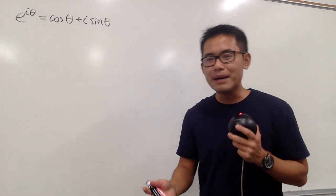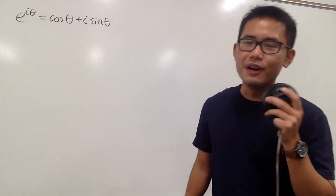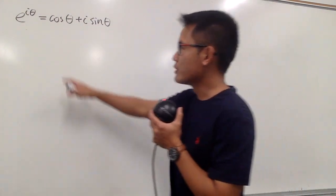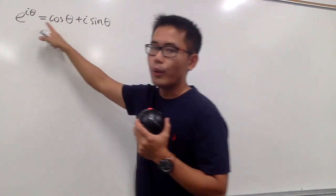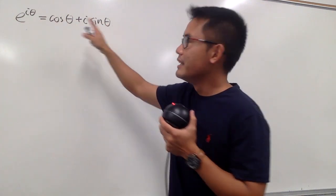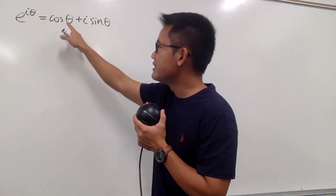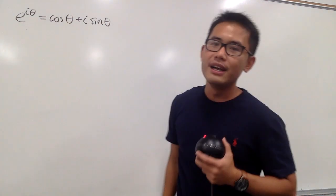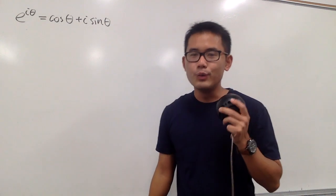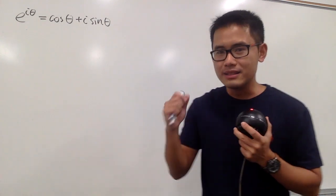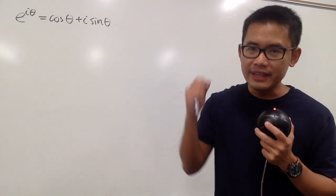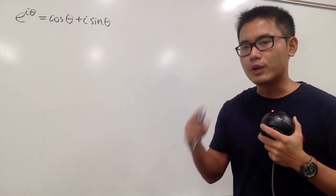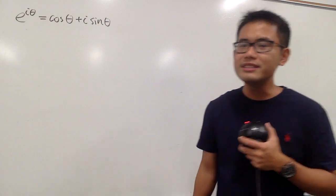I'm going to show you guys a complex definition of sine and cosine. First, we're going to start off with Euler's formula: e to the i theta equals cosine theta plus i sine theta. We are going to plug in z and negative z into theta, and we'll come up with two equations.